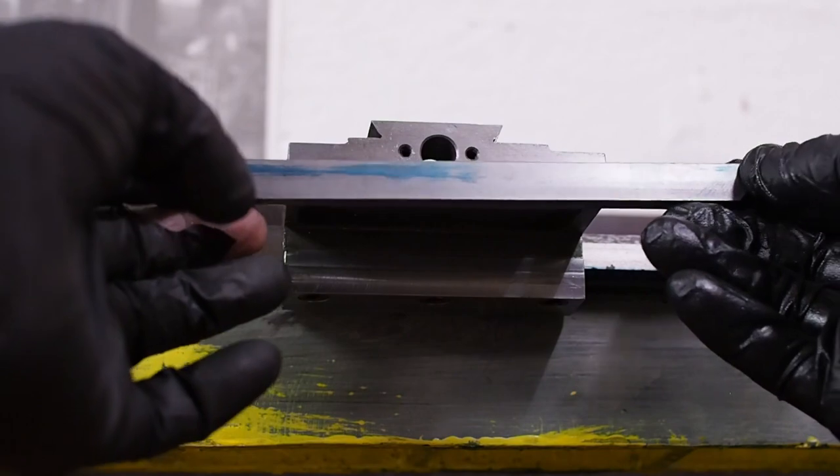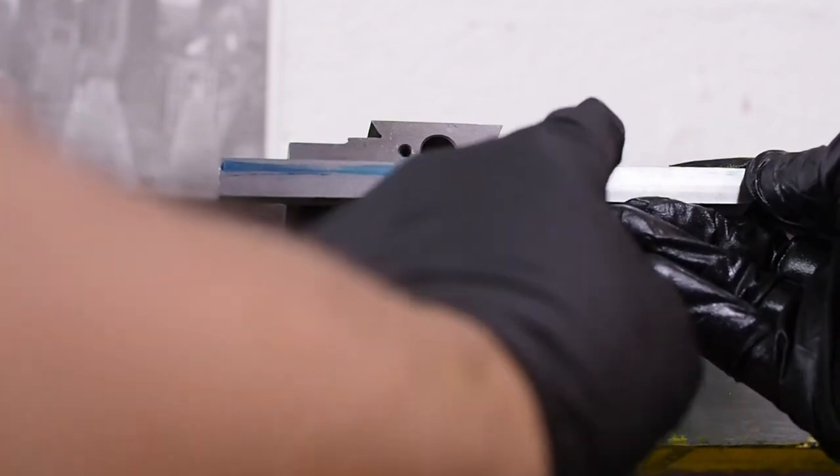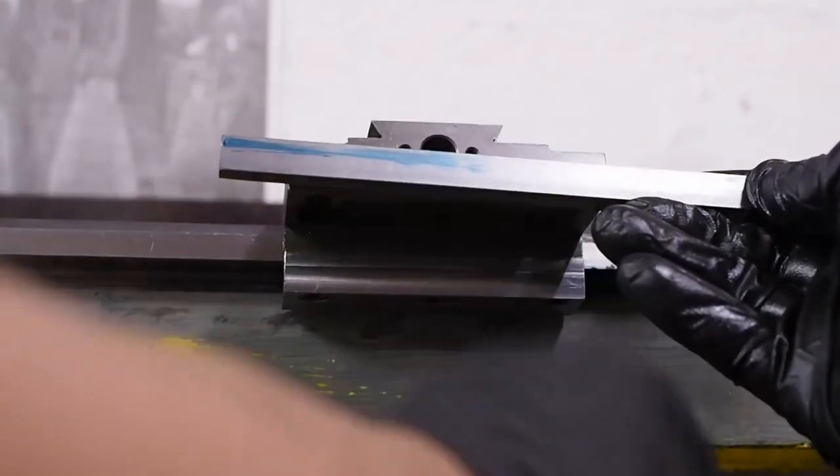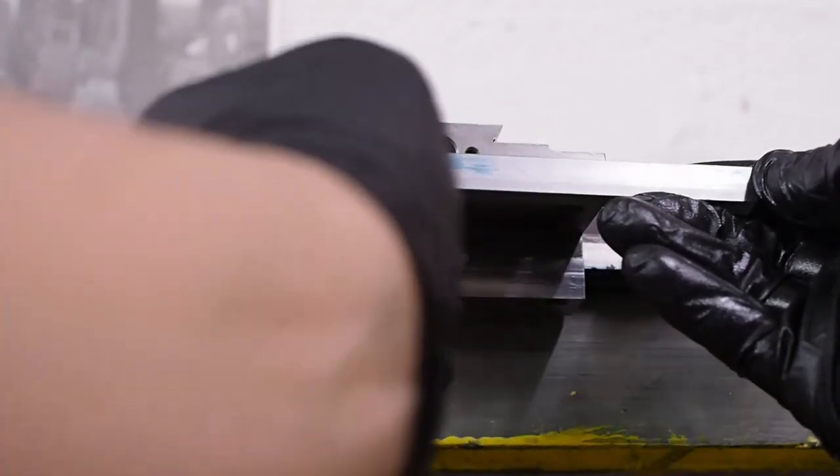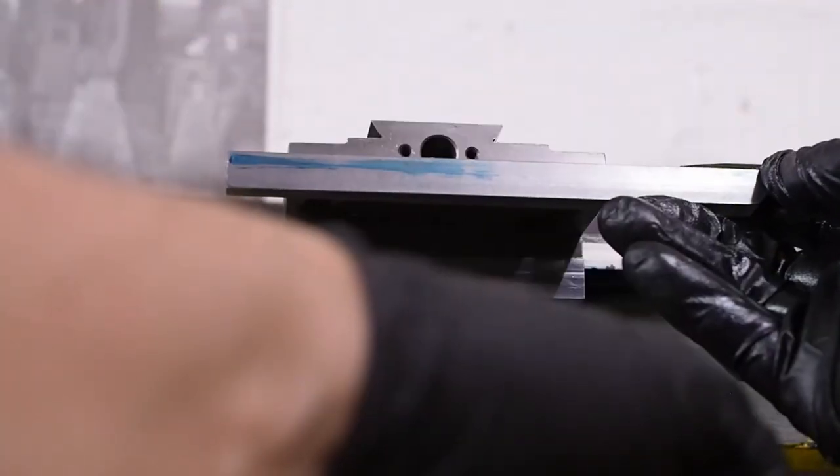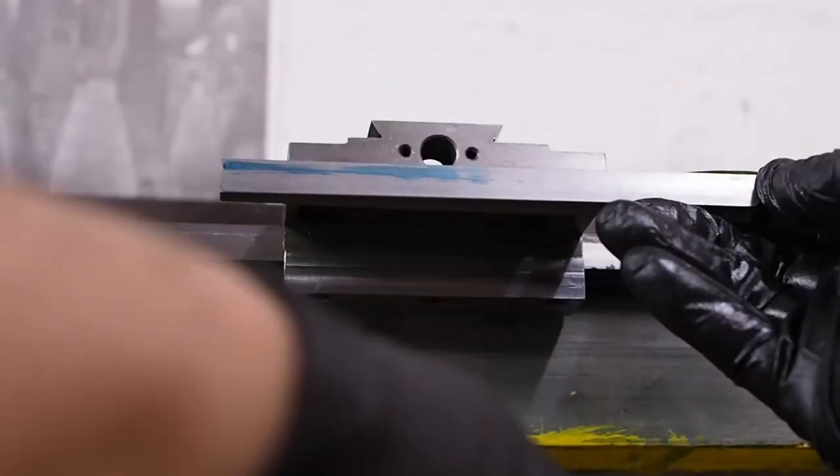Here you can see why it's important to first give a rough scraping, sort of cross-hatching to provide some texture. If you try and blue up a surface which is nearly a ground finish in this case, the spotting compound just smears and you really don't know is this all contact or is this just a blob that smeared across the whole length. So next thing I need to do is first give it a rough cross-hatching, blue it up again and then we'll see where it goes from there.